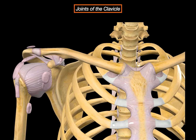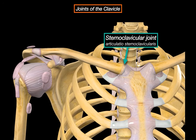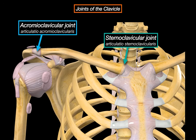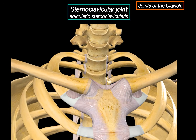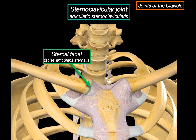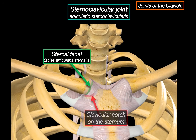Let's now move on to the joints the clavicle forms. There are two joints. On the medial end, the clavicle is attached to the sternum through the sternoclavicular joint. And on the lateral end, it's attached to the acromium of the scapula through the acromioclavicular joint. The sternoclavicular joint is a joint where the articulating head is the sternal facet of the clavicle, and the articulating fossa is the clavicular notch of the sternum. These two together form the articular surfaces of the sternoclavicular joint.